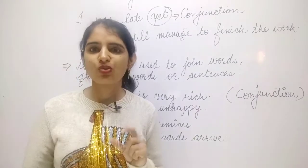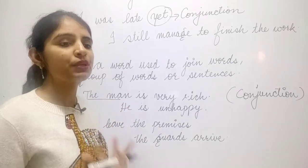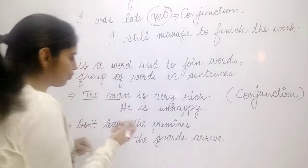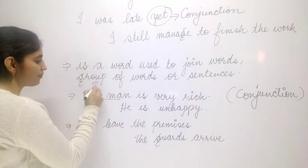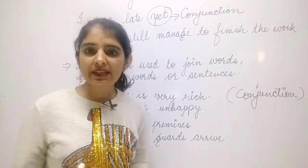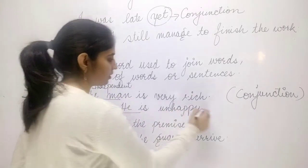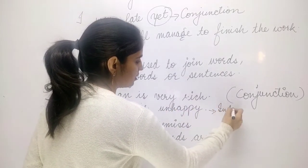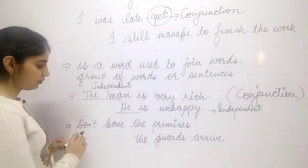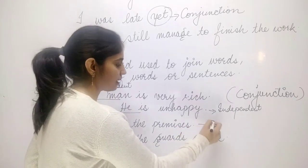When a sentence is complete and its meaning is clear on its own — when it does not depend on any other sentence to complete its meaning — that sentence is called an independent sentence. 'He is unhappy' is also complete, so it is also independent. 'Don't leave the premises' — imperative sentence, also complete, so it is again an independent sentence.